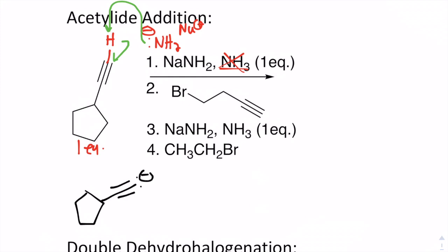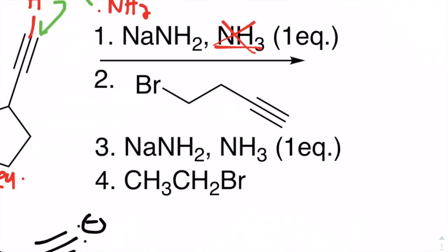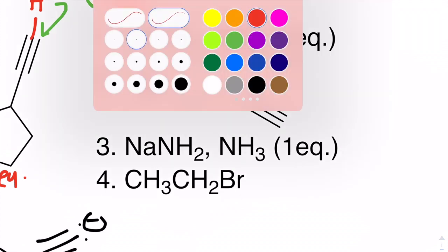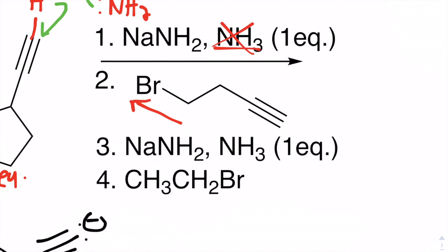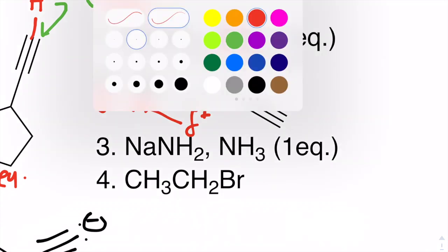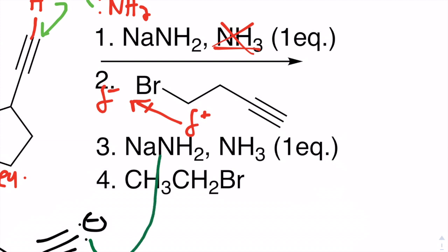Acetylide anions are extremely good nucleophiles. These acetylide anions generated in step one can extend the carbon chain with an alkyl halide. Halogens are extremely electronegative, so there is a localized dipole toward the bromine, making that bromine partially negative and the carbon bearing it partially positive. Partially positive carbons are electrophiles, so the acetylide nucleophile attacks that electron-deficient carbon, facilitating the removal of the bromine.